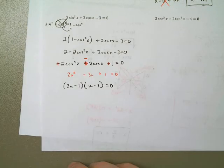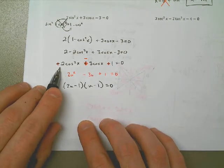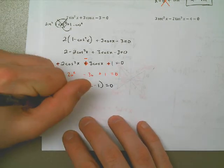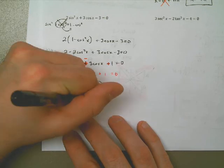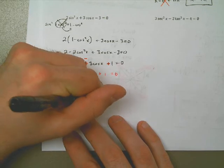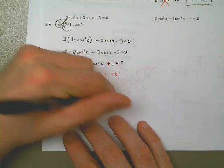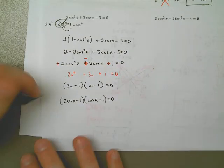That means I have two possible solutions. Either 2 cosine of x minus 1 equals 0, or cosine x minus 1 equals 0. From the second factor, cosine of x equals 1. From the first, cosine of x equals 1/2.